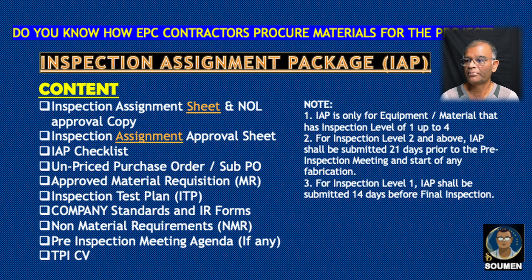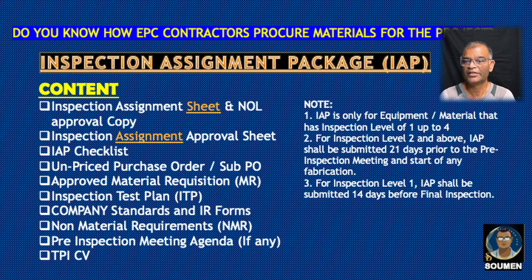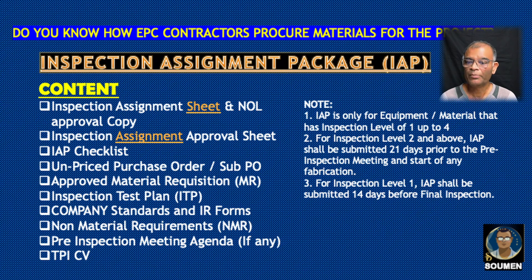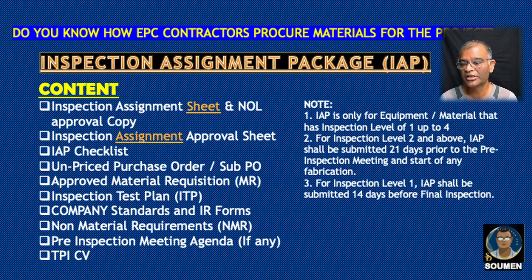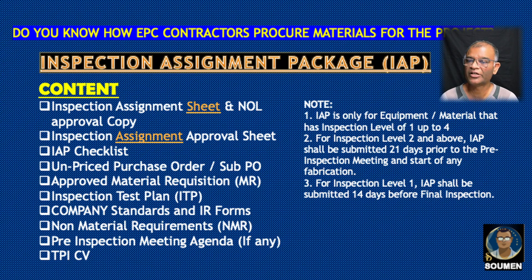The Inspection Assignment Package (IAP) must be prepared; it is required from Level 1, 2, 3, and 4. The contents of the IAP include: inspection assignment sheet, no-objection letter approved copy, inspection assignment approval sheet, IAP checklist, unpriced purchase order, sub-PO, approved material requisition (MR), inspection test plan, company standards and IR forms, non-material requirements (NMR), pre-inspection meeting agenda (for Level 2, 3, and 4), and the third-party inspector CV who will represent the vendor inspection department.